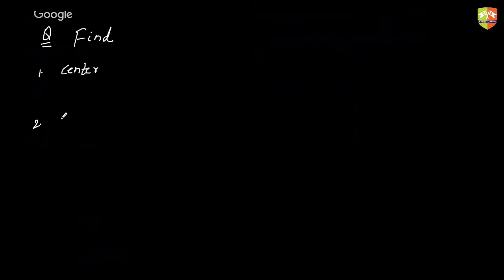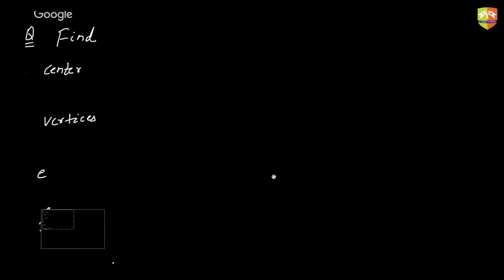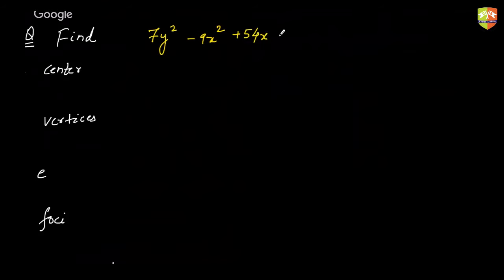Let's take a question: for the conic 7y² − 9x² + 54x − 28y − 116 = 0, find: (1) center, (2) vertices, (3) eccentricity, (4) foci, (5) equation of the directrices.